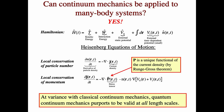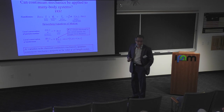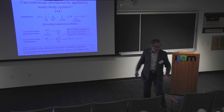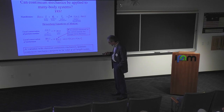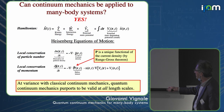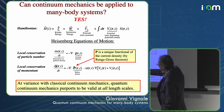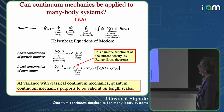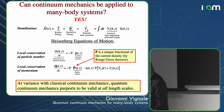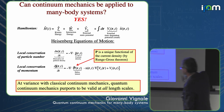There is a basic theorem of time-dependent density functional theory — the Runge-Gross theorem — that comes to our rescue and tells us that, at least in principle, we can do it. You start from operatorial equations of motion for the density and current operator, then average them over the evolving state of the system, and arrive at equations that look like the equations of hydrodynamics. In particular, this generalized Euler's equation tells you that the time derivative of the current density is expressed as the divergence of a stress tensor.